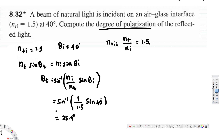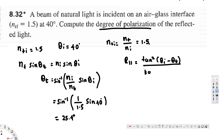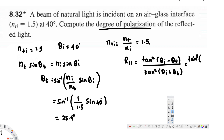Now let's find the reflectance at parallel using Fresnel's equation. R_parallel equals tan squared(θ_i − θ_t) divided by tan squared(θ_i + θ_t). Plugging in: tan squared(40 − 25.4) divided by tan squared(40 + 25.4). This gives us R_parallel equal to 0.0142.